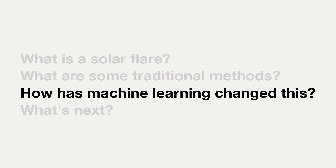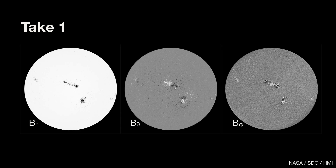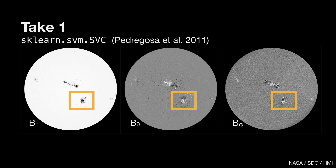I'll take you through four projects I've worked on with many colleagues to predict solar flares using machine learning, starting with take one — our first and simplest approach. For this study, we took images of the solar magnetic field, looked at only the active regions, and calculated 25 features like the magnetic flux or how much energy is stored in the magnetic field — doing this for every single active region at every single point in time. We ended up with 38 million features describing 2,100 active regions, and we posed this as a binary classification problem: is this active region going to produce a large flare — yes or no? For our learning algorithm, we used the SVM classifier in Scikit-learn.